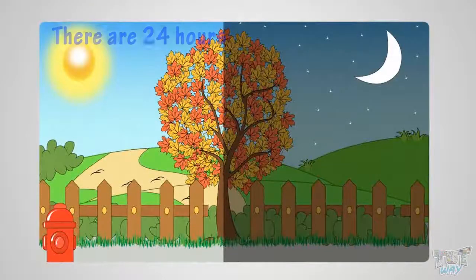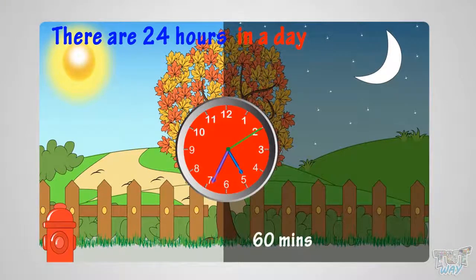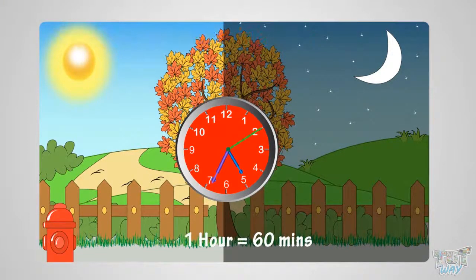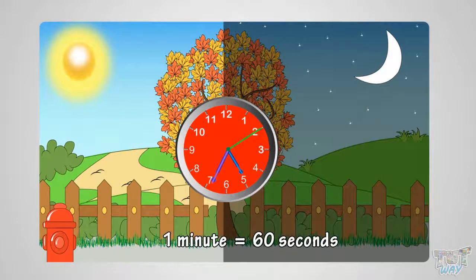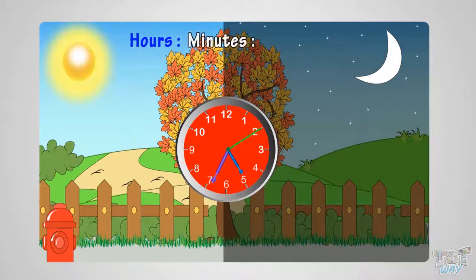First of all, there are 24 hours in a day, 60 minutes in each hour, and 60 seconds in each minute. We write time as hours, minutes, seconds.